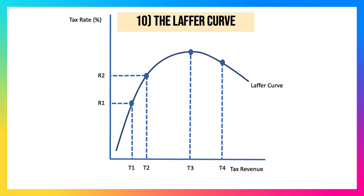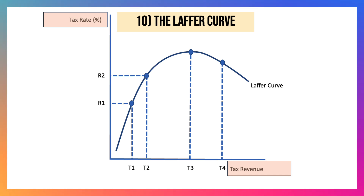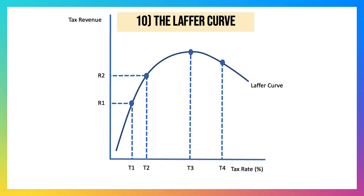I've chosen the Laffer curve. There's really only one thing wrong with this — not the Laffer curve itself, but they've labelled the axes incorrectly. It should be tax percentages on the x-axis and tax revenue on the y-axis. The Laffer curve does not have to be a parabola hitting 0 and 100%. The intuition is correct: if you raise taxes beyond T3 as a percentage, you might get less tax revenue.